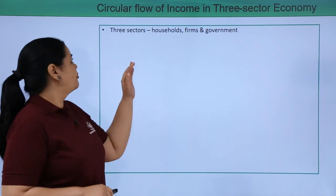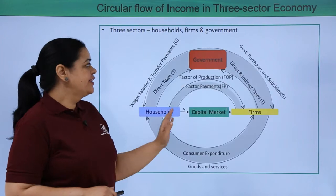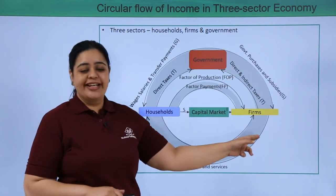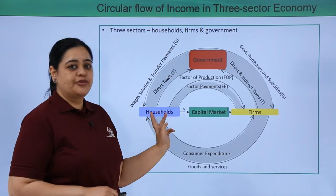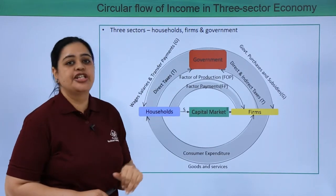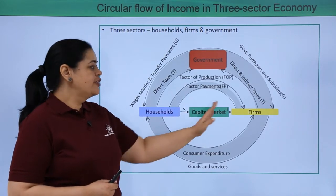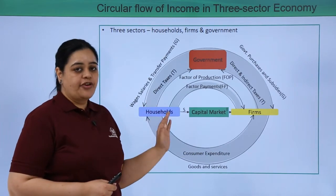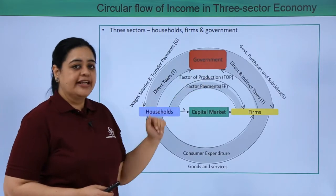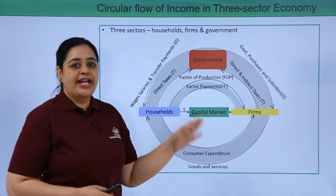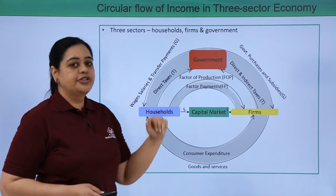The next is the three-sector economy, wherein the government sector is also included. The government will charge direct and indirect taxes from both firms and households, which would be an additional flow of income to the government. So the household will not spend everything they earned from factor services — some part would go to the government. The same applies to firms; they would not spend everything on producing goods, as some part would go to the government.